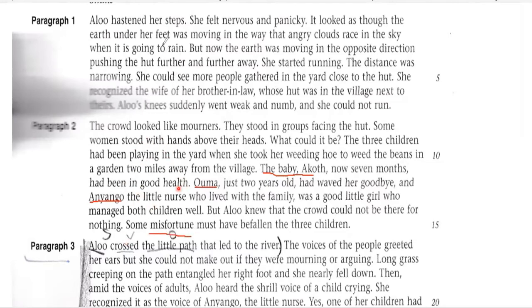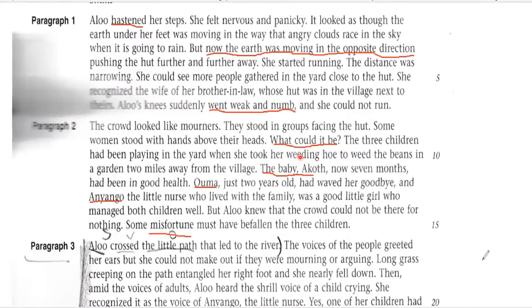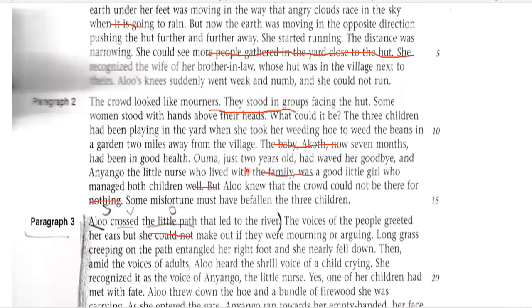The characters are very nicely described. She senses that some misfortune has happened to her children because she can see that people are gathered around her hut and she is now panicky and nervous. She has hastened her steps but feels that the distance is decreasing rather than increasing — a very beautiful description by the writer. Her knees went weak and numb; because of nervousness she is unable to move. These two paragraphs are full of suspense — you don't know what has happened. Look at the beautiful combination of short sentences for effect and long sentences.